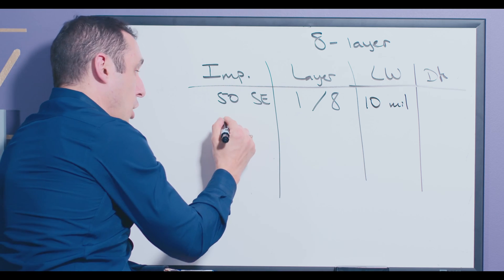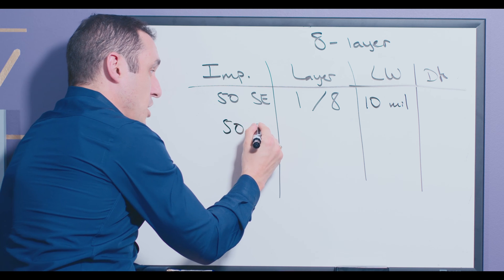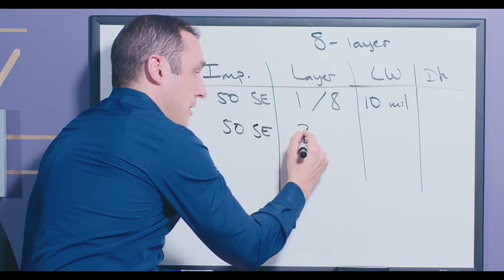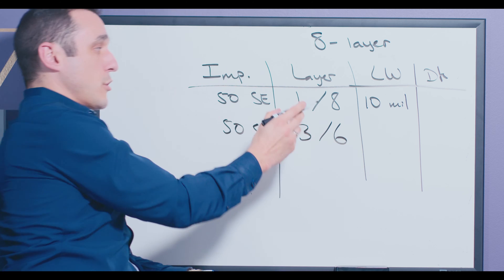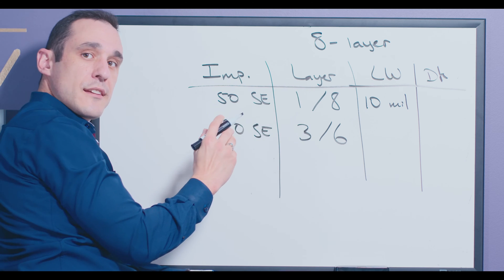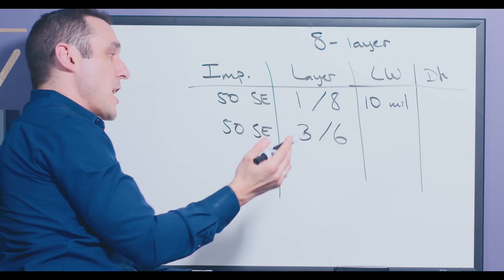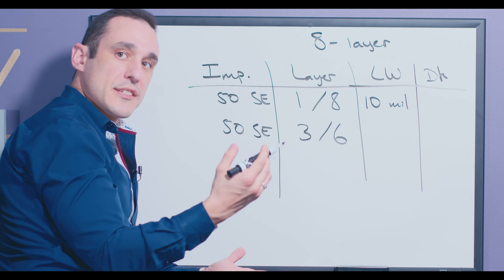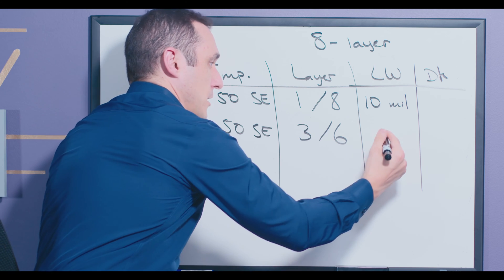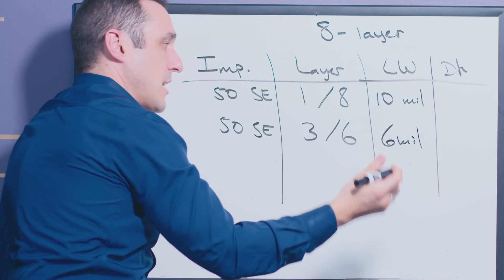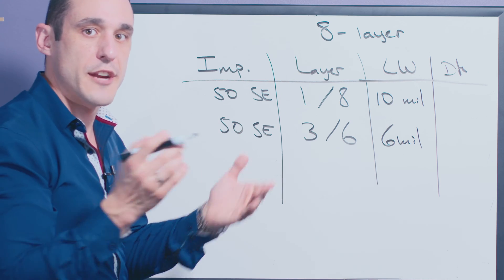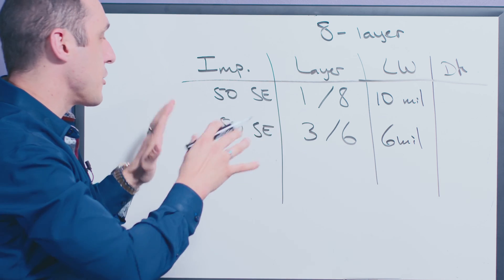When your manufacturer sends you the impedance table, they'll give you a line width — that line width could be, for example, 10 mil. The next entry in the table could also be 50-ohm single-ended, but maybe this time it's on layers three and six. Now we're assuming we have a ground plane below layers one and layer eight, which gives us our microstrip configuration. The next available routing layers would be three and six — those are in stripline. These could have a different line width, let's say six mil. They may also give you the DK values above and below, as well as the layer thicknesses, so you could copy that into your CAD tool.